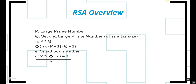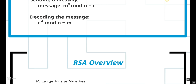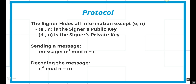The signer also generates two other variables: e, a small odd number, and d, which is 2 multiplied by the totient of n, plus 1, divided by e. The signer hides everything except e and n — that's the signer's public key. The only thing kept secret is d, which is the signer's private key.